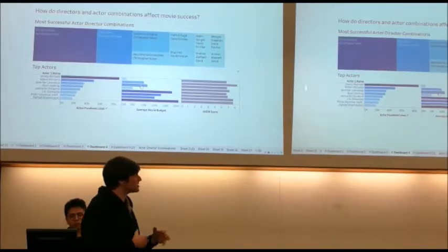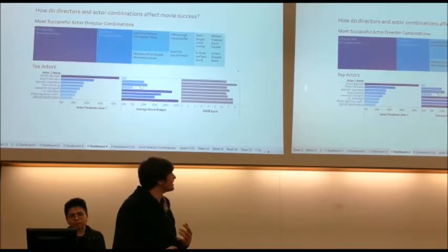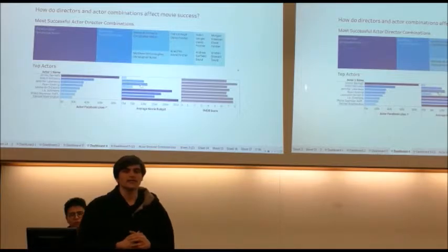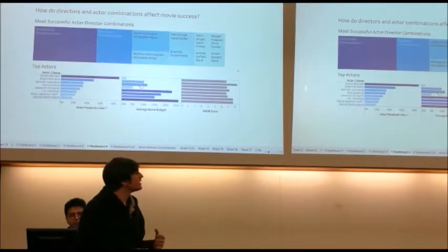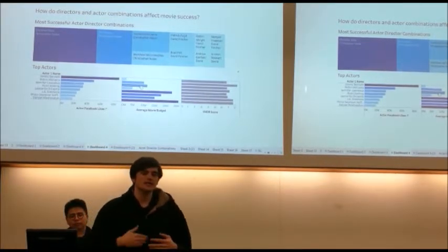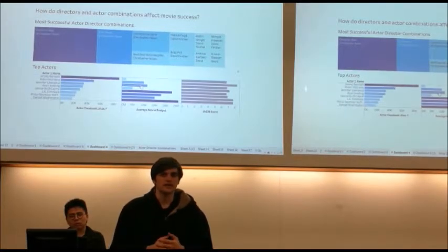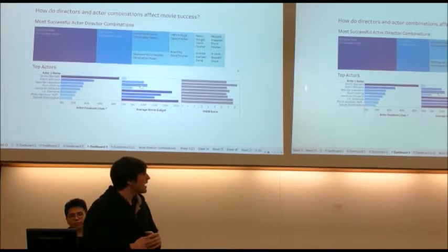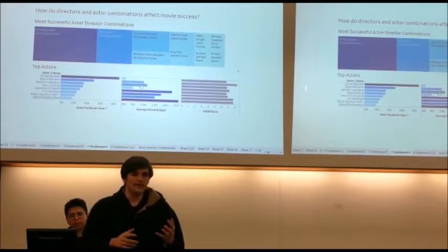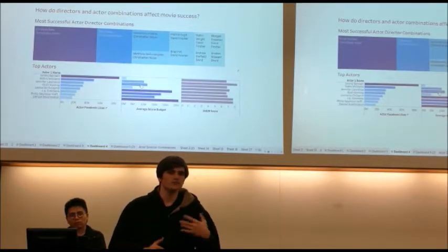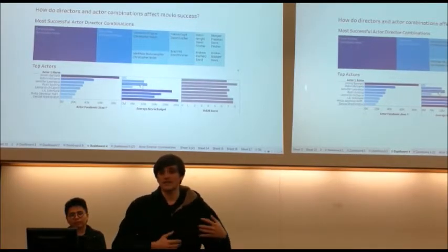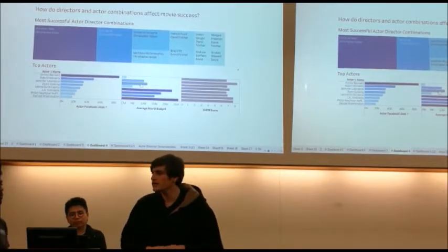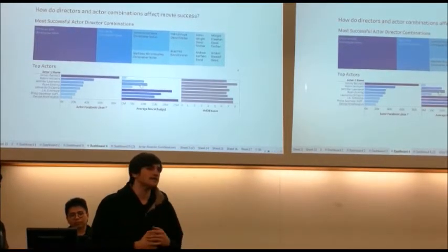And we can see the top actor-director pairs. And then we looked at some of the actors specifically. We sorted them by their popularity according to number of Facebook likes. Interestingly, we saw once they got to a certain fame level, around the 10,000 Facebook-like level, they all appear in similar-sized movies based on their budget. And also, more importantly, their IMDB score in the movies they star in is roughly similar. So even though an actor might be more famous, that doesn't make their movies score more famous, similar to the director. But that combination may lead to the higher gross margin.